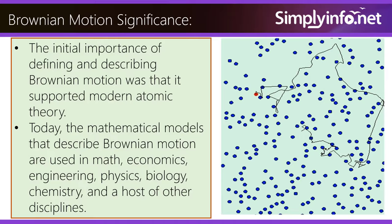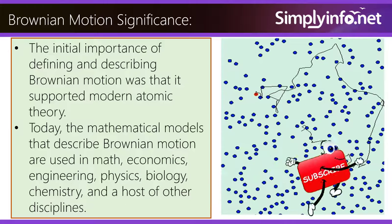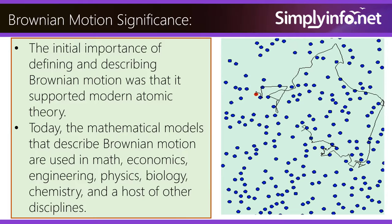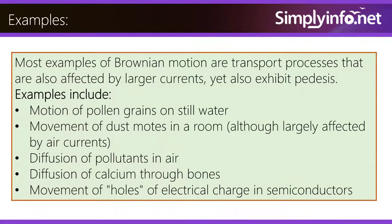The initial importance of defining and describing Brownian motion was that it supported modern atomic theory. Today, the mathematical models that describe Brownian motion are used in math, economics, engineering, physics, biology, chemistry, and a host of other disciplines. Examples include motion of pollen grains on still water, movement of dust motes in a room (though largely affected by air currents), diffusion of pollutants in air, diffusion of calcium through bones, and movement of holes of electrical charge in semiconductors.